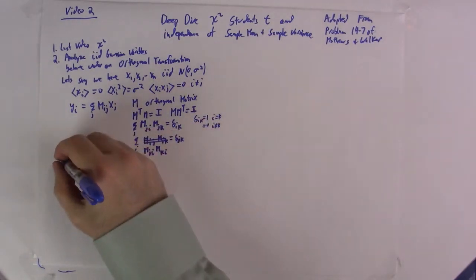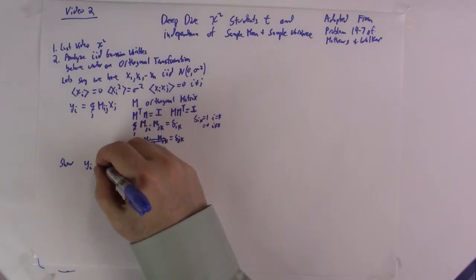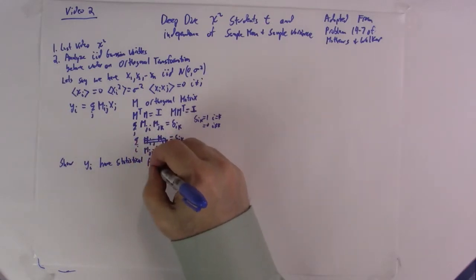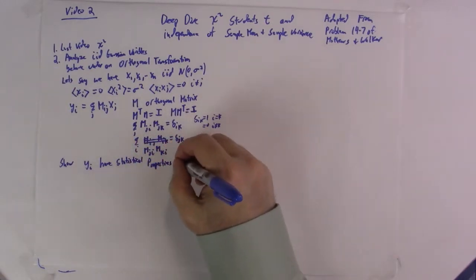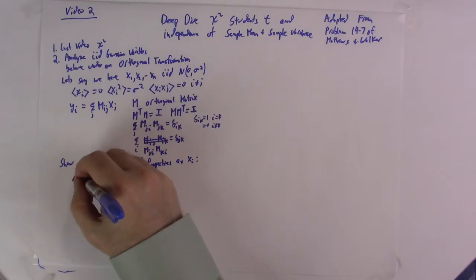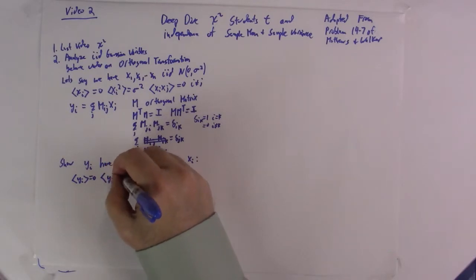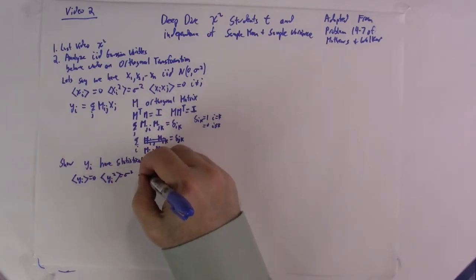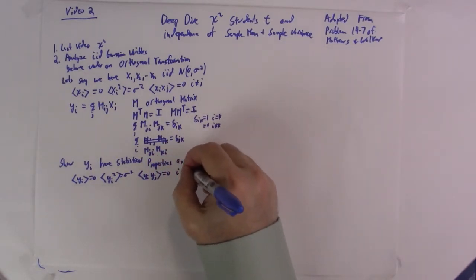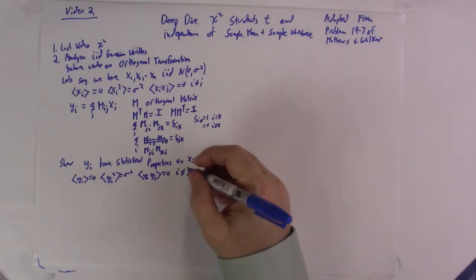The first thing we want to do is show that the yi have the same statistical properties as the xi — namely, we're going to show that the expectation of yi equals zero, the variance of yi squared is sigma squared, and the covariances are all zero. This is really just plugging in the definitions, so let's do it.